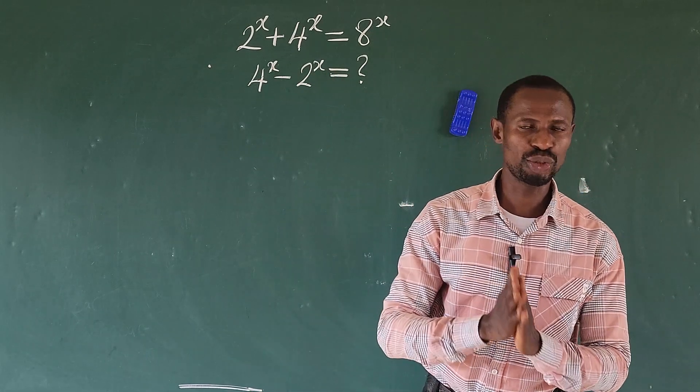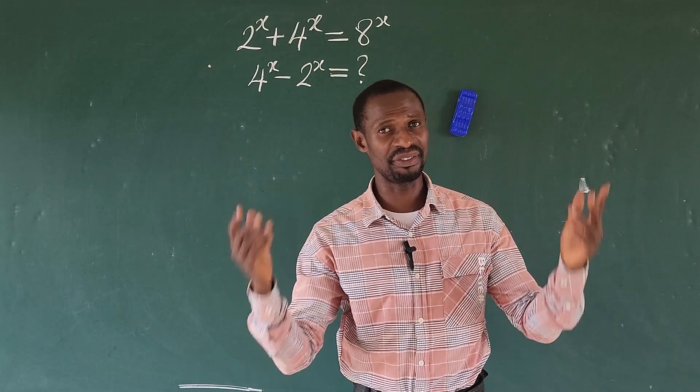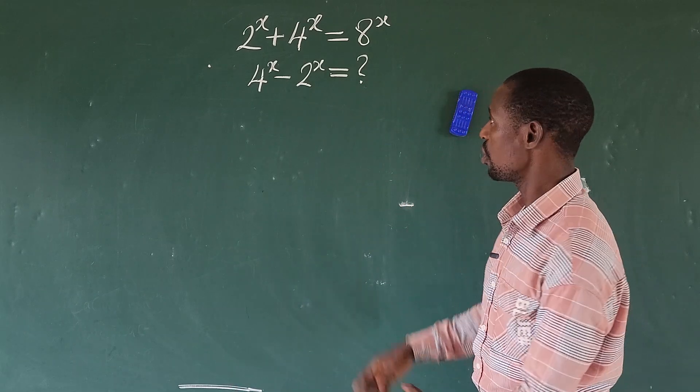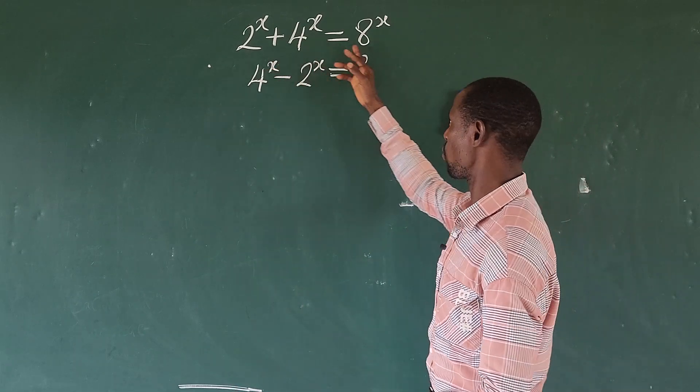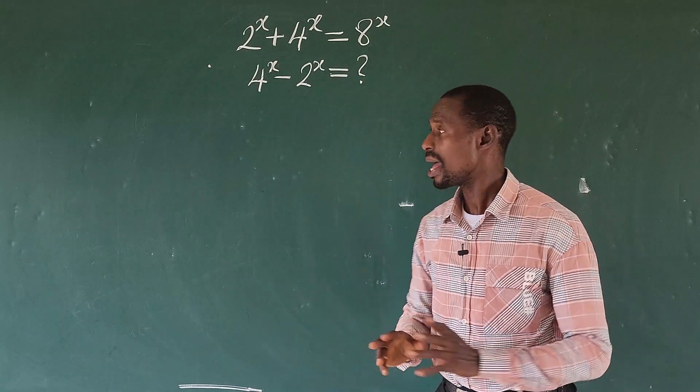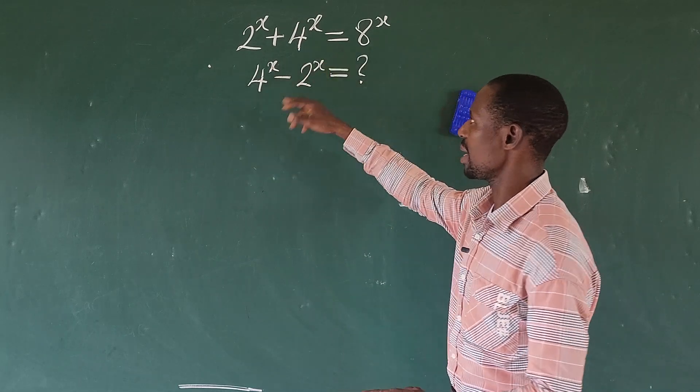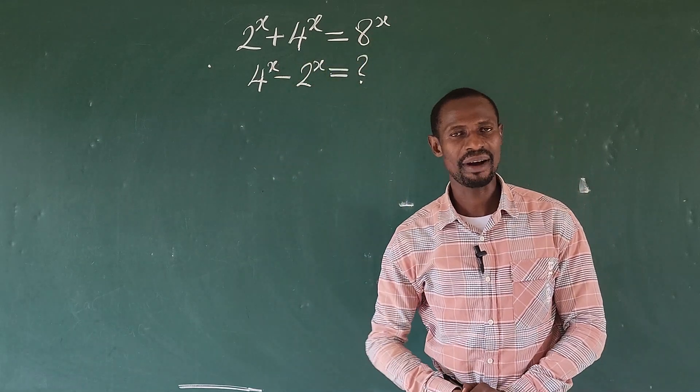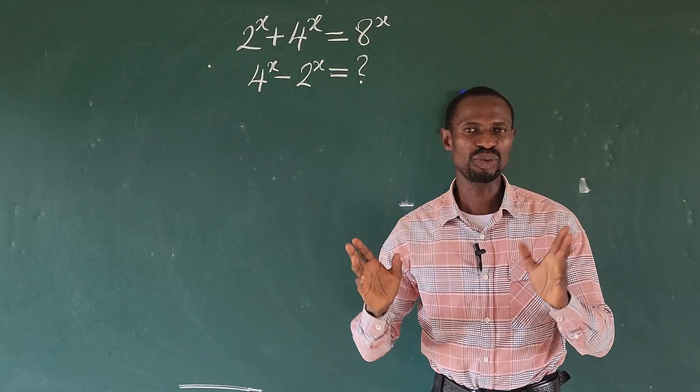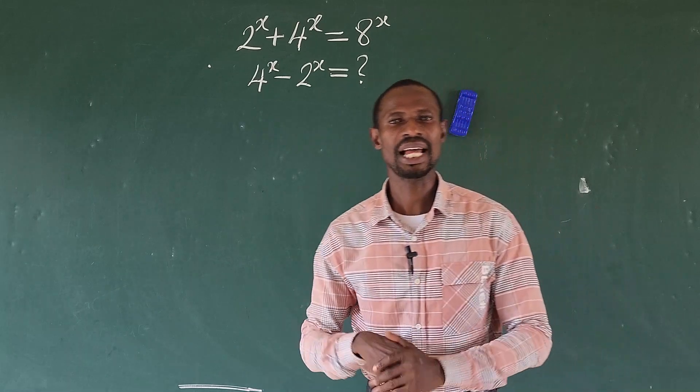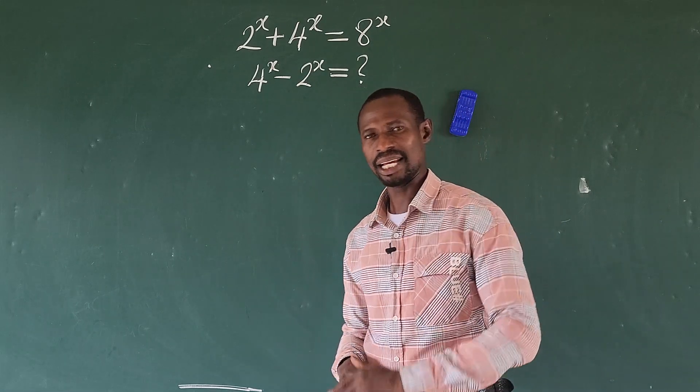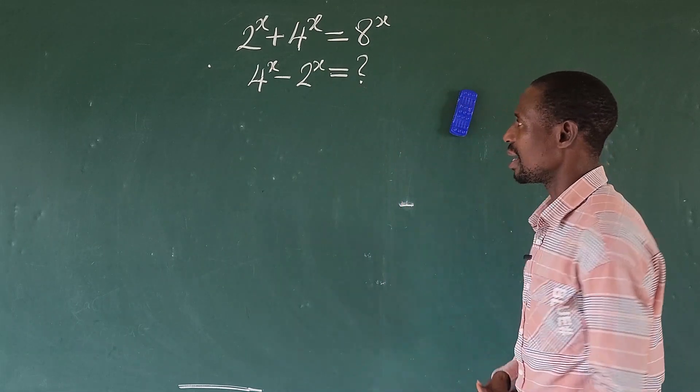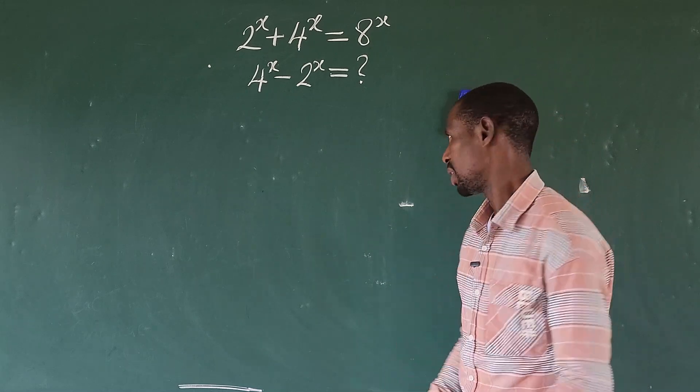We can solve this challenge using two methods. The first method can be very lengthy. In that method, we can actually solve this equation to get the value of x, then put it here and simplify and get our answer from here. But here we are going to use a quick method to solve this. I tell you, this will take less than 2 minutes to solve.